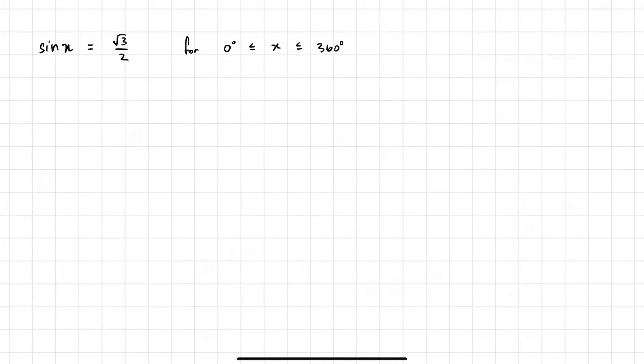When you look at sin x equals root 3 over 2, hopefully you already know the answer to this question. It's actually one of our exact values, our exact ratios, probably on your formula sheet as well. Basically x would be 60 degrees. So sine 60 would give us root 3 on 2. This is just a basic question we've done up until this point.